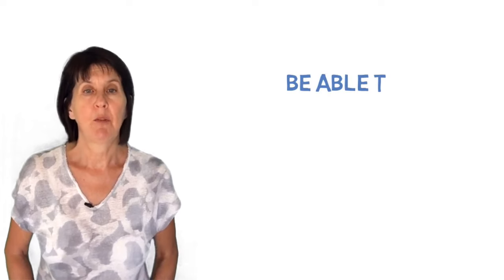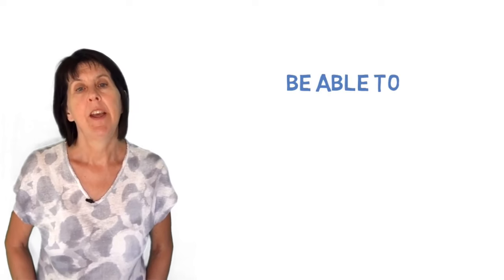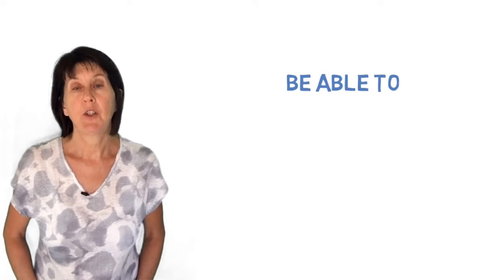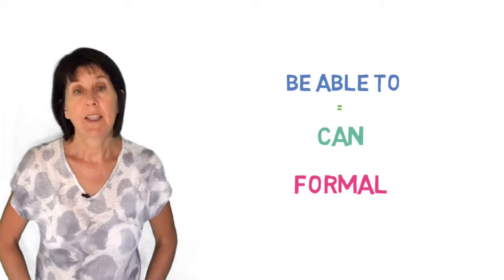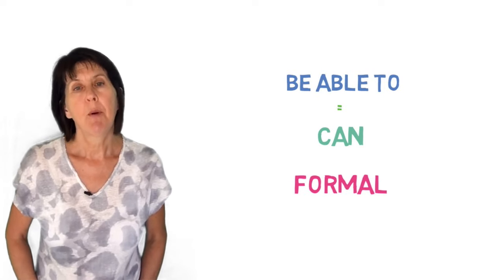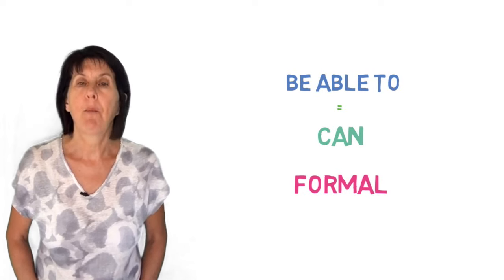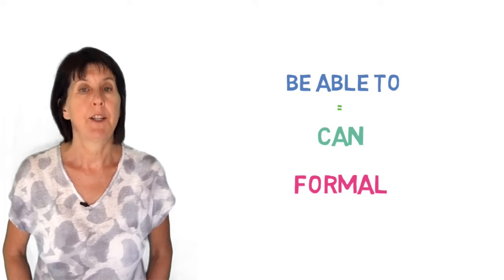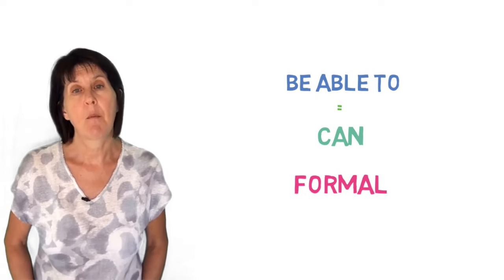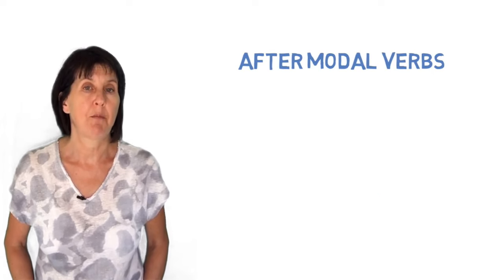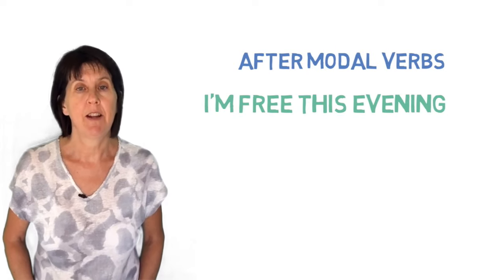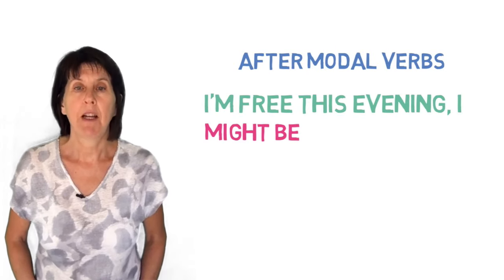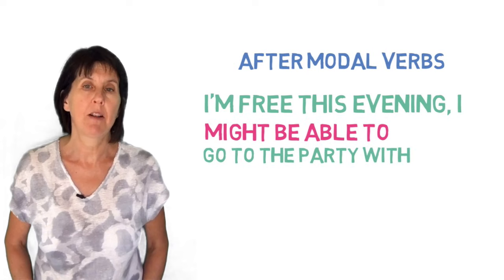Moving on to be able to. We use be able to just like can but it's more formal. We use it to talk about abilities, but we often use it in places where it's not possible to use can. For example, it isn't possible to use can after another modal verb. For example, I'm free this evening — I might be able to go to the party with you.